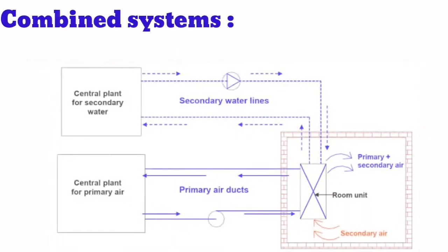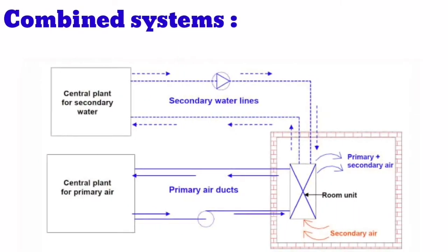The combined hybrid system provides cooling using both air and water. The system can be configured in various forms — for example, the DX system may use an air-cooled condenser for heat rejection, or a water-cooled condenser. The chilled water system may similarly use either an air-cooled or water-cooled condenser for heat rejection.